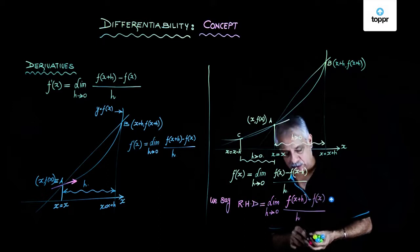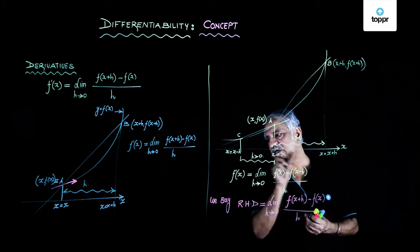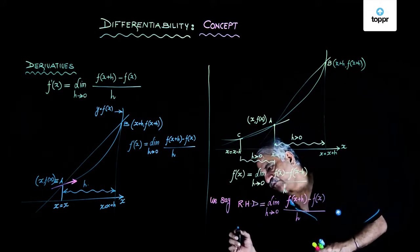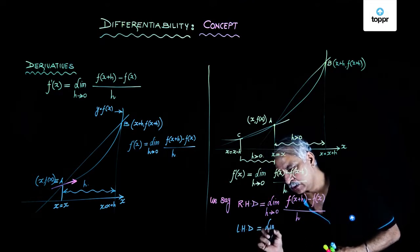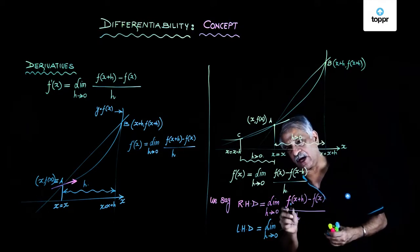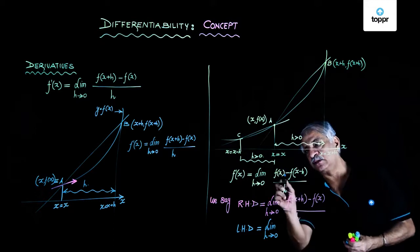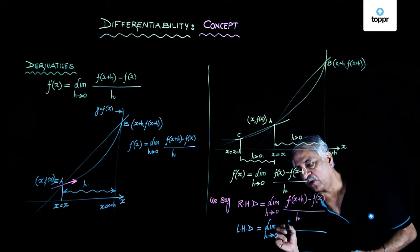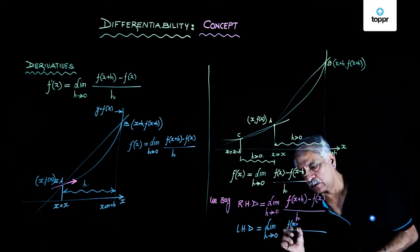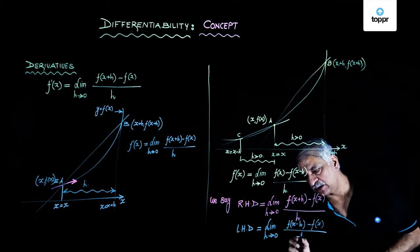And when I have C approaching A from the left-hand side, then we call this as left-hand derivative. This is equal to limit as h tending to 0. Understand, h is a positive quantity. Now to keep it in the same symmetric order, what we can write down, this particular relation as f(x) - f(x-h) upon minus h.